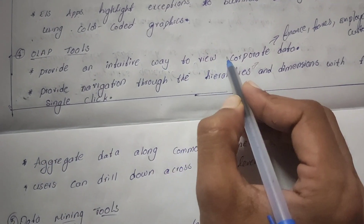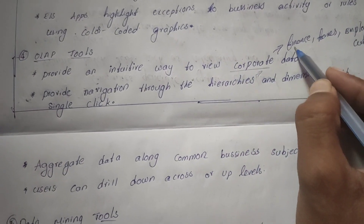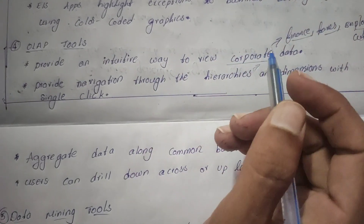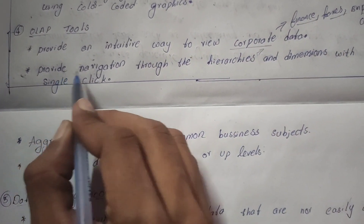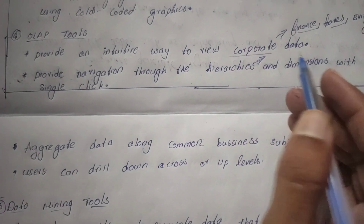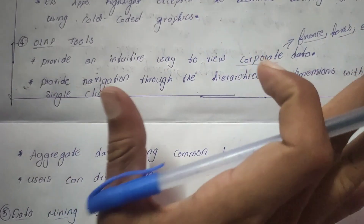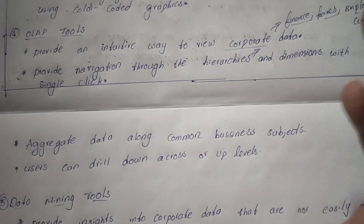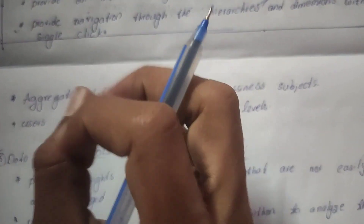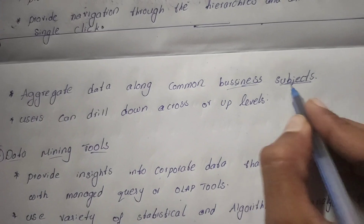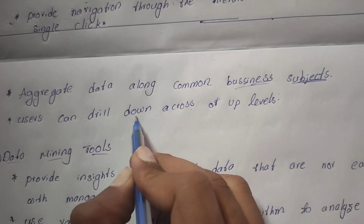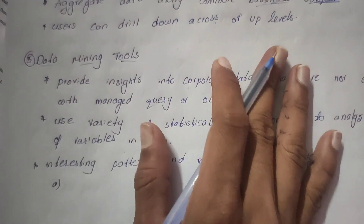OLAP tools provide an intuitive way to view corporate data — any finance, taxes, or employee-related data of a company. They provide navigation through hierarchies and dimensions with a single click, and can aggregate data along common business subjects. Users can also drill down, drill across, or level up.